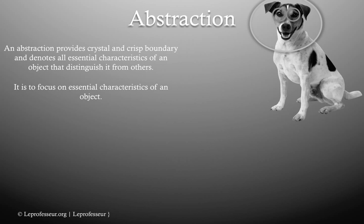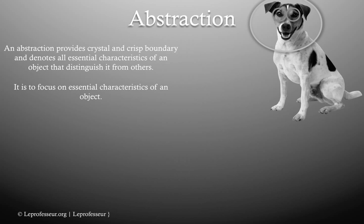The idea here is to focus on essential characteristics of an object. The smallest object here, for example, is the eye — it has the characteristic that the dog can see. An eye can be a human eye, a dog's eye, or any other animal's eye, but its purpose is to see. Its attributes may differ — for example, whether it is a dog's eye — but the essential function remains.